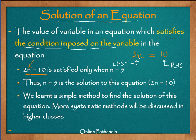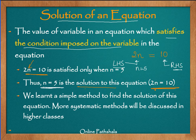What should the value of n be such that it results in 10? We know 2 multiplied by 5 gives 10. When I put n equals 5, then I get 10 on both the right hand side and the left hand side. So the value of n equals 5 is the solution for this algebraic equation 2n equals 10. This is a trial and error method where we try out some values and then reach a solution. In higher classes, we will discuss more systematic methods to find solutions to algebraic equations.